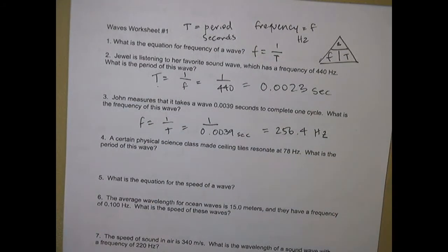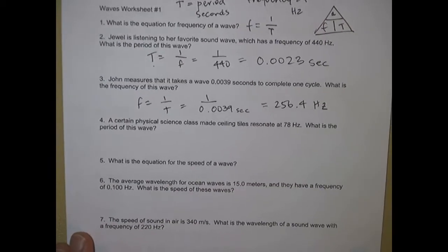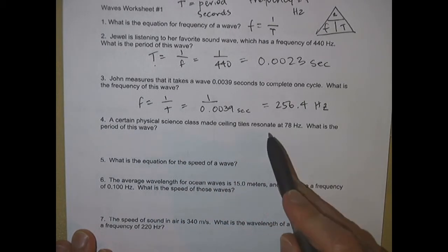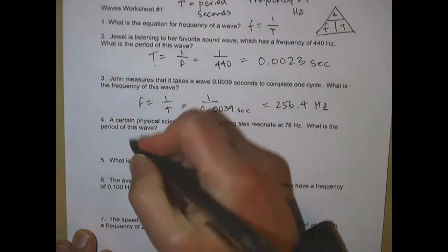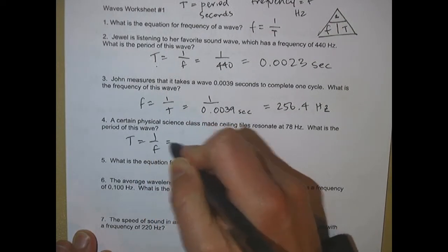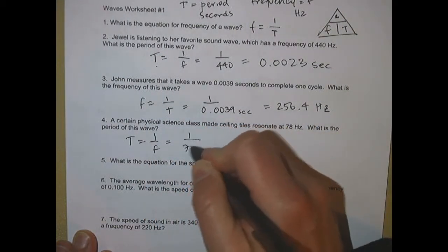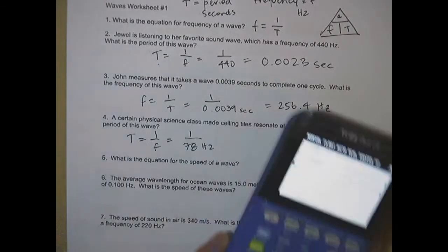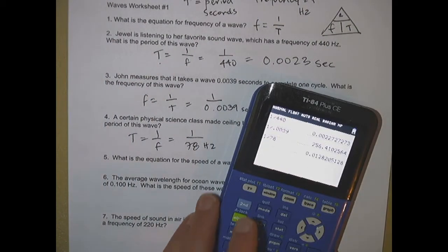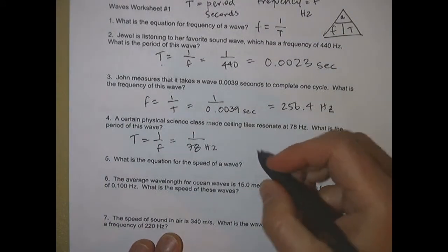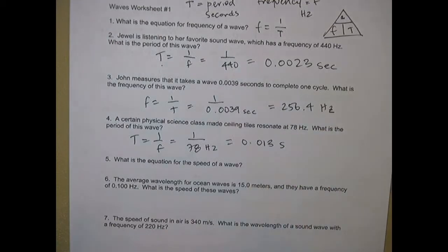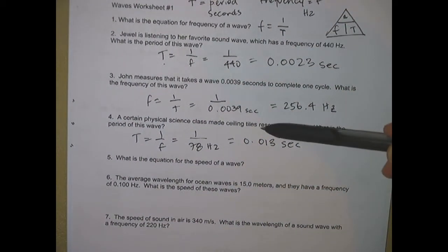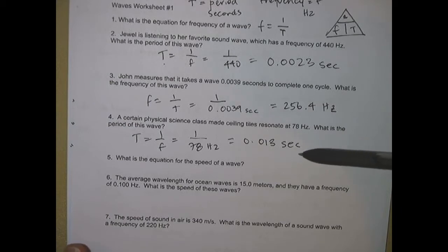A certain physical science class made ceiling tiles resonate at 78 Hertz. What is the period of this wave? Period equals one over frequency — one divided by 78 Hertz. On the calculator, one divided by 78 gives about 0.013, and the label is seconds. Those first four problems are a breakdown of how you use the frequency triangle.